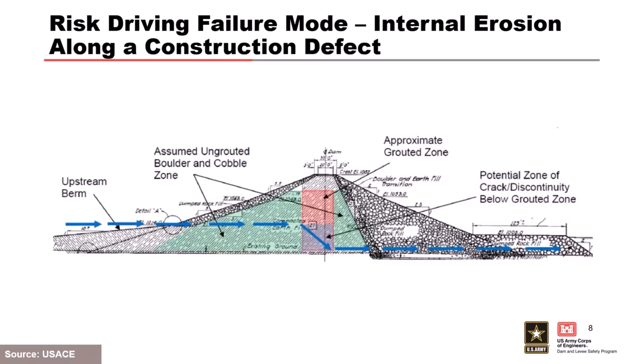Based on that risk assessment, the risk-driving failure mode was identified as internal erosion along a construction defect. When that rock fill was placed on the end slope through the core, there was an uncompacted zone underneath that was never removed — fill was just placed on top of it. Even if all the voids in the rock fill were filled with grout, the uncompacted zone underneath would remain. What should have been done was to remove the rock, prepare the surface, mix it back up since it had gone through freeze-thaw over winter, moisture-condition it, and then place compacted fill on top. That wasn't done.